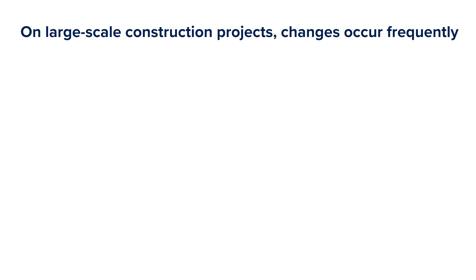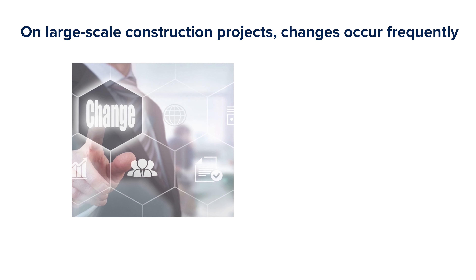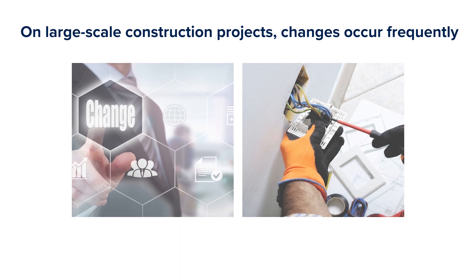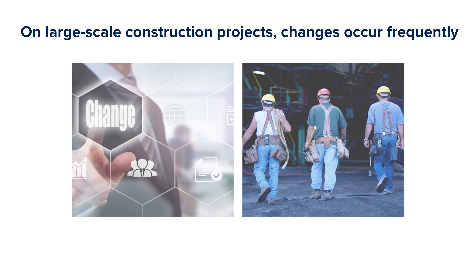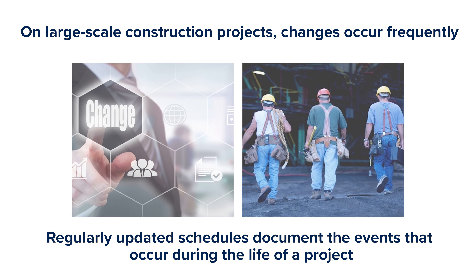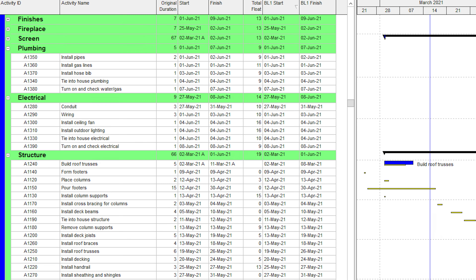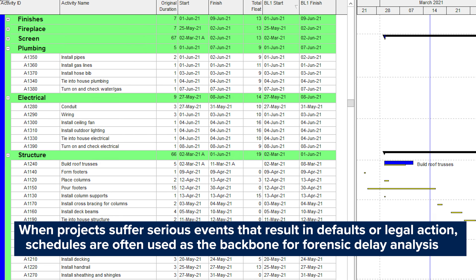On large-scale construction projects, changes occur frequently. Owners can issue change orders for certain areas of the project, subcontractors can fall behind on their work, and in some cases leave the project altogether due to poor performance. Regularly updated schedules document the events that occur during the life of a project. When projects suffer serious events that result in defaults or legal action, schedules are often used as the backbone for forensic delay analysis.